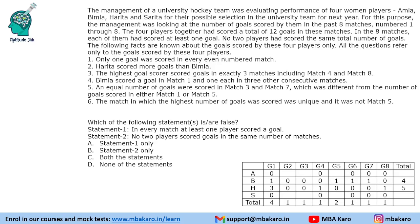Question 4: Which of the following statements is or are false? Statement 1: In every match, at least 1 player scored a goal — that is true. Statement 2: No 2 players scored goals in the same number of matches. Bimla scored in 4 matches, Harita in 3, and the other two players scored in 1 or 2 matches respectively — all different. So this is also true. None of the statements is false.